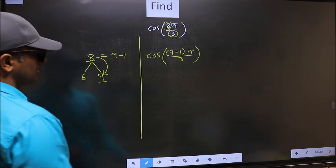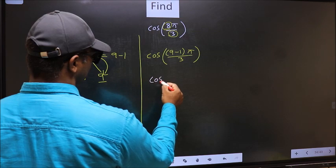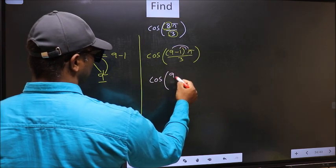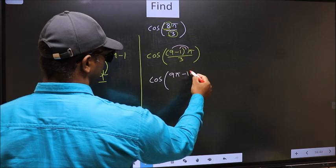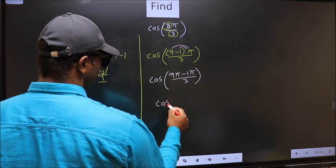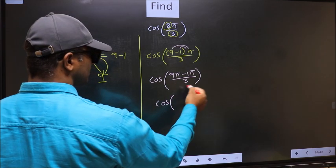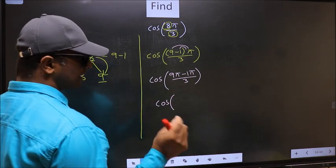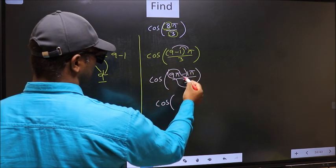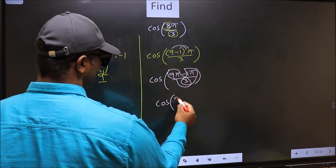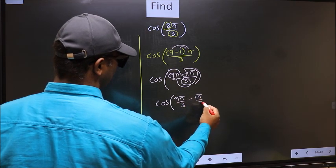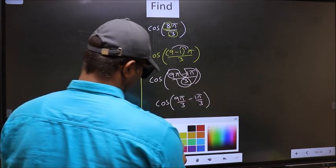Next, cos. Now you should open up the brackets. You get 9π minus 1π by 3. Now cos, in this you should split the denominator in this way: that is 9π/3 minus 1π/3.